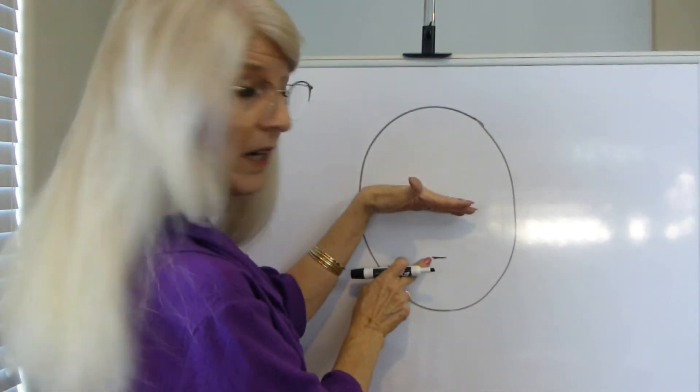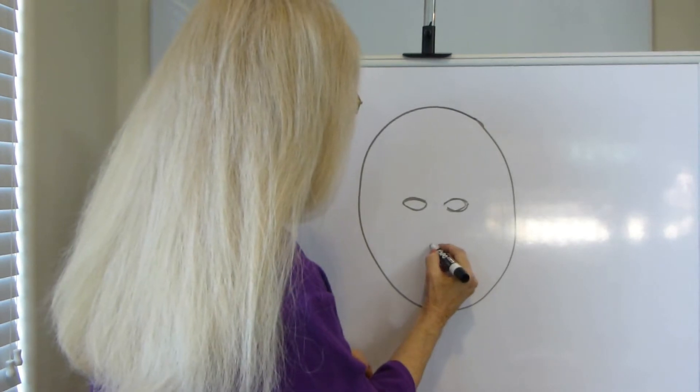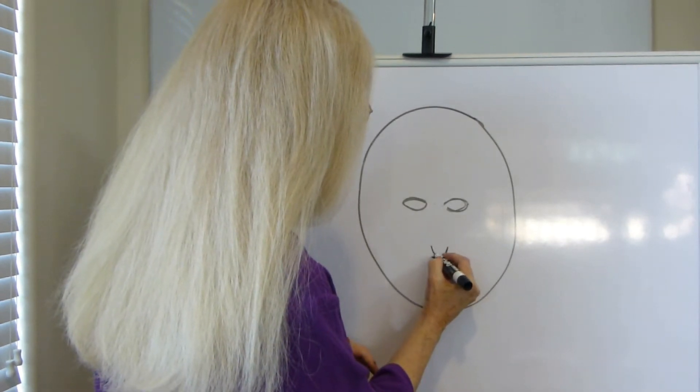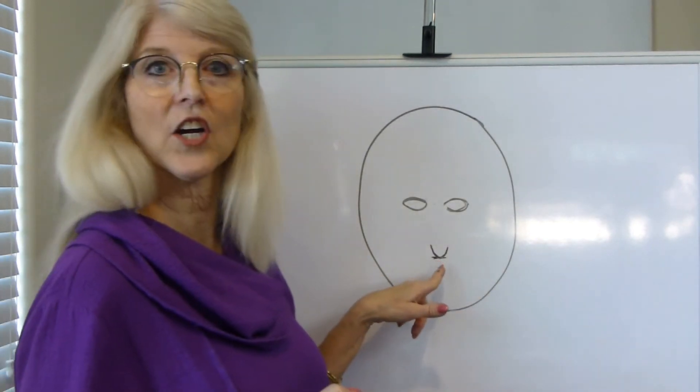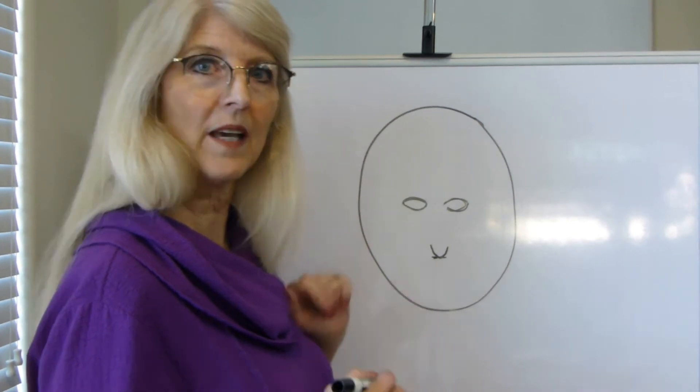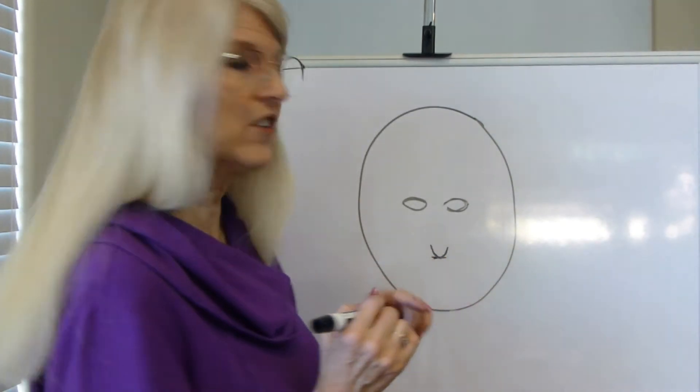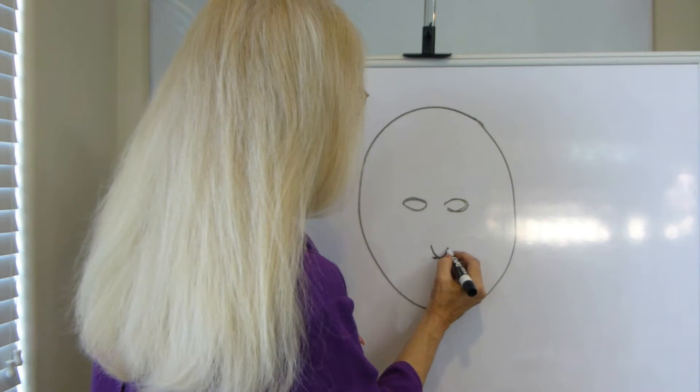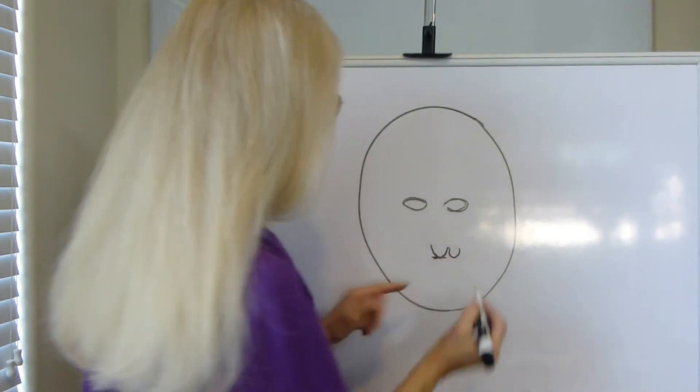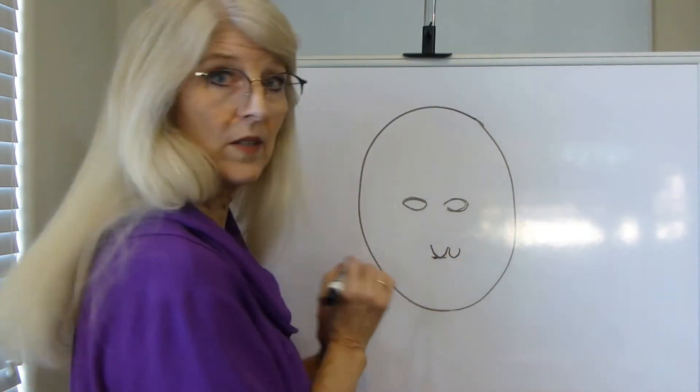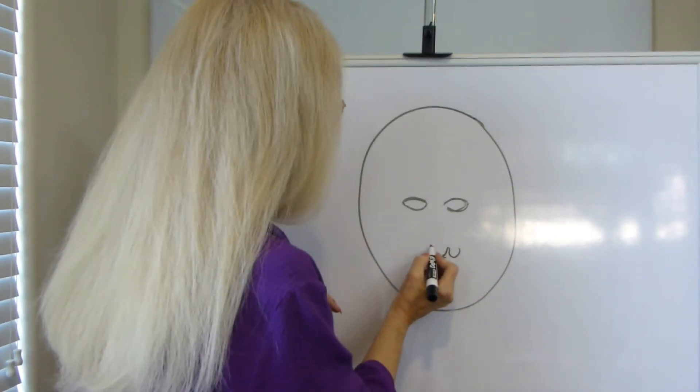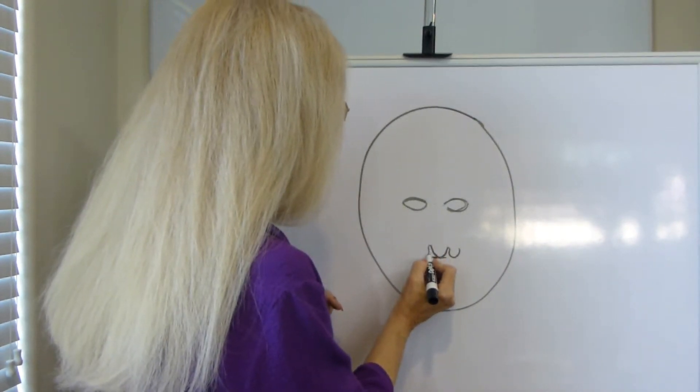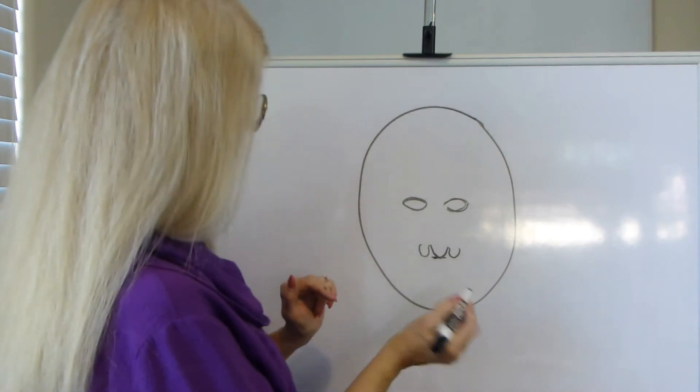Cut that in half, put a little line there, and let's put a cup, a curve, the bottom part of a circle, a little arc, upside down arc. Now on either side of that, we're going to go up and around. I'm going to do it again. Ready? Up and around. That's the nostril of the nose.